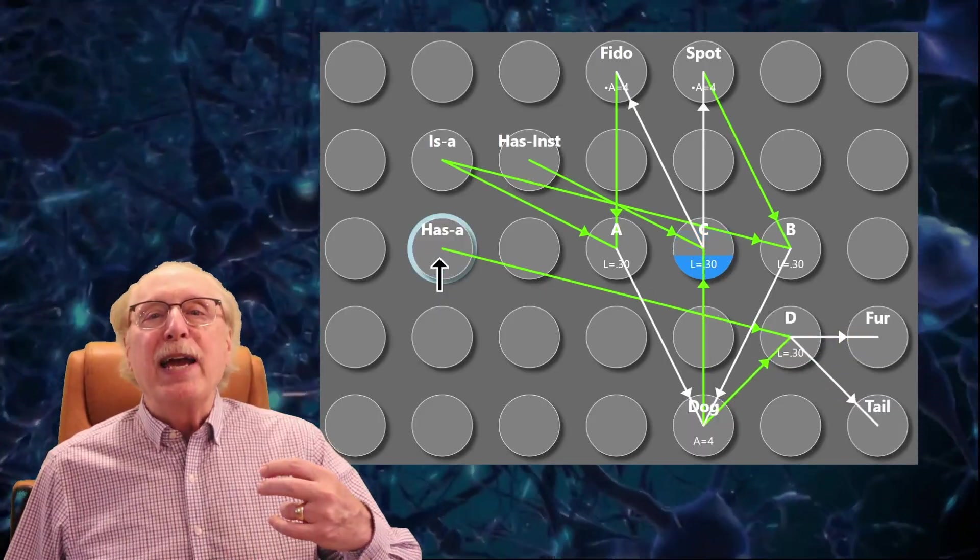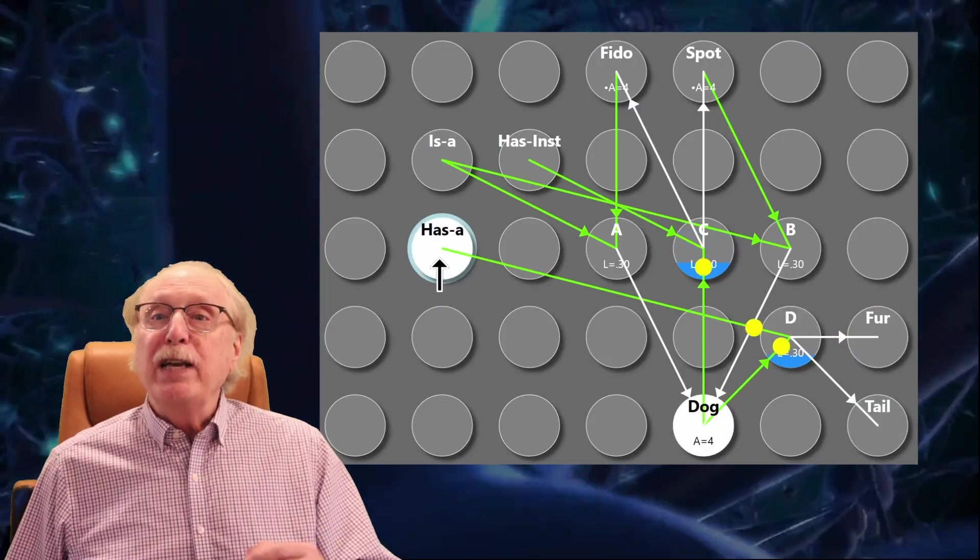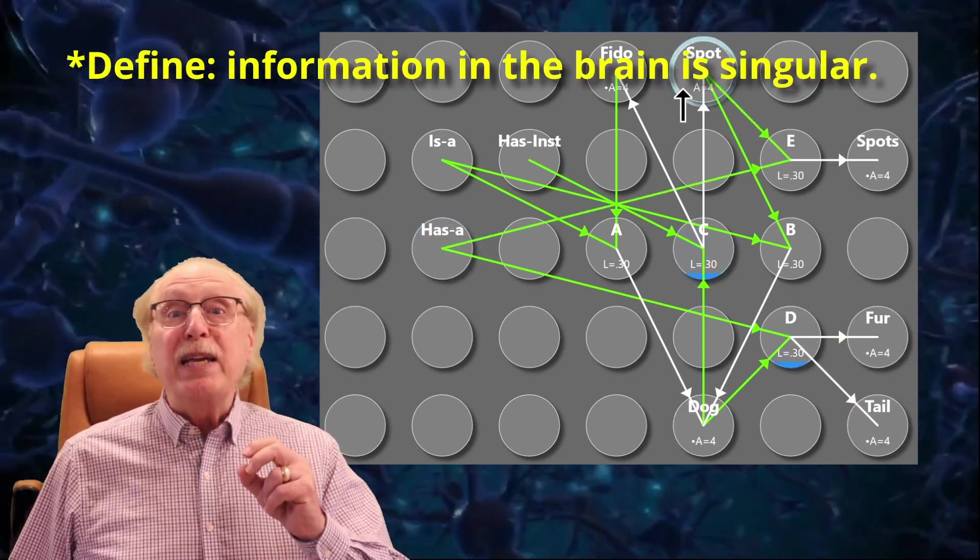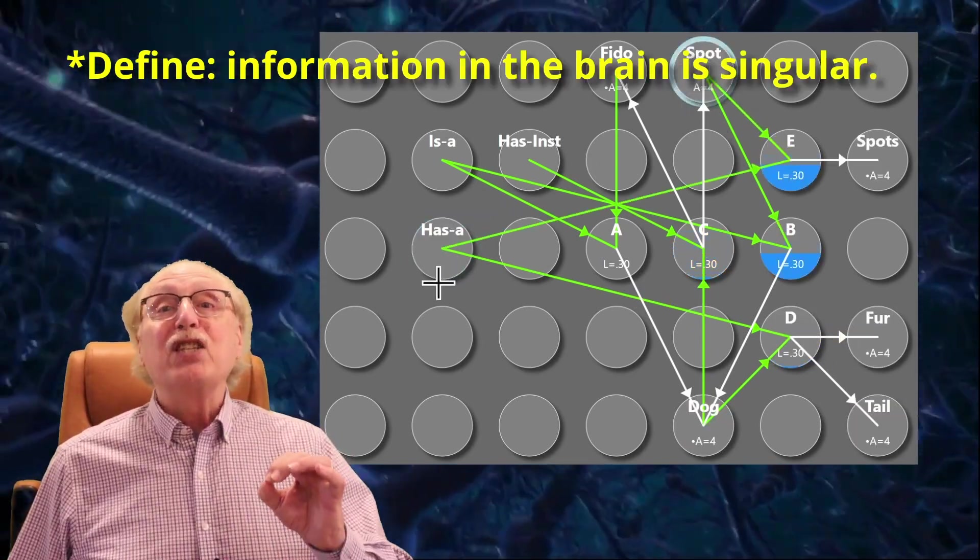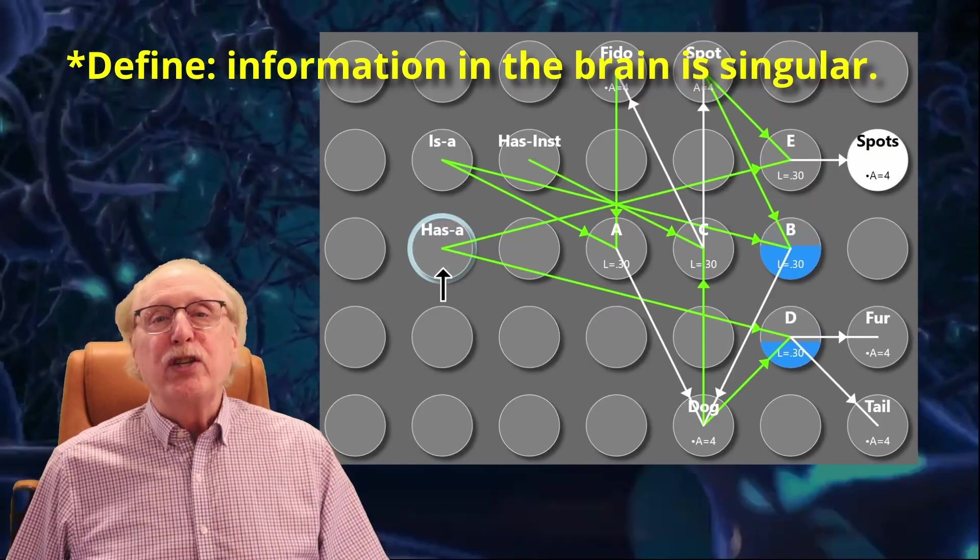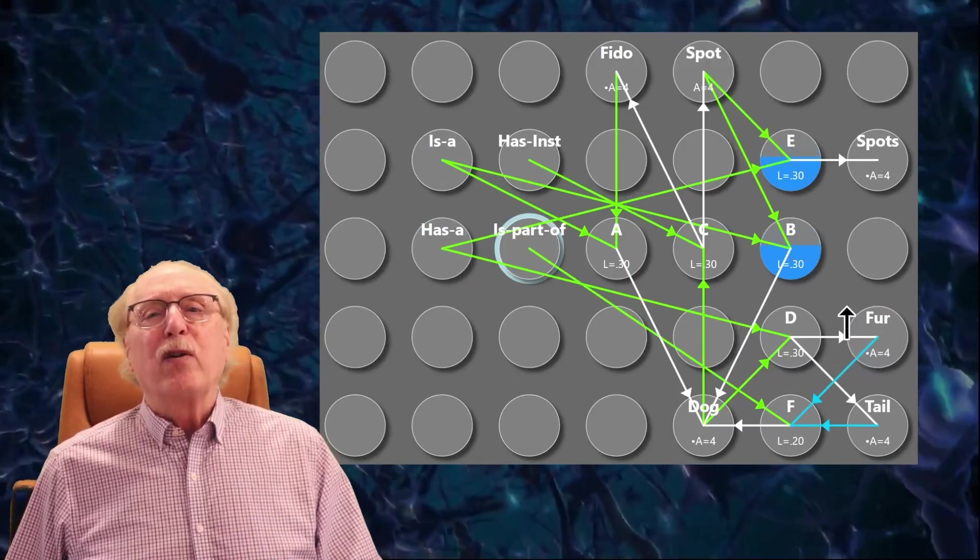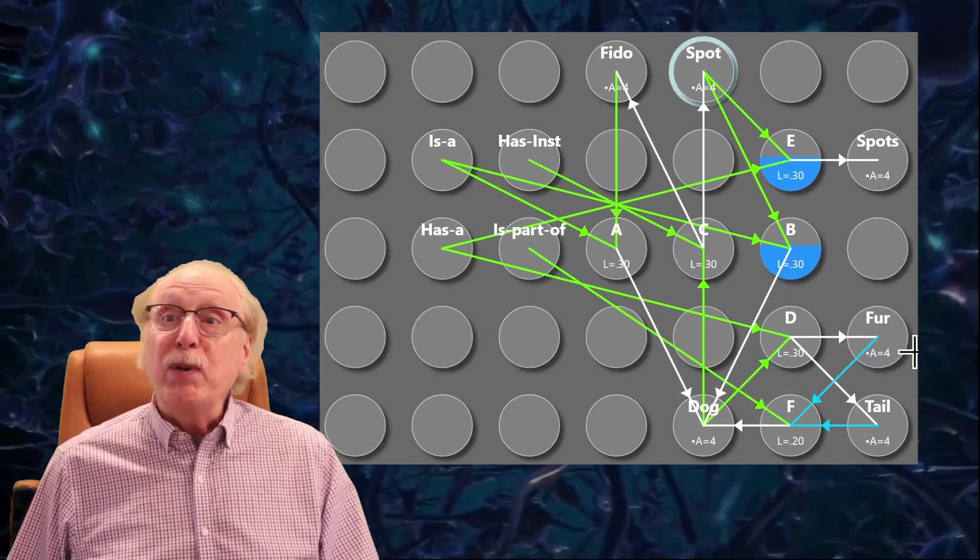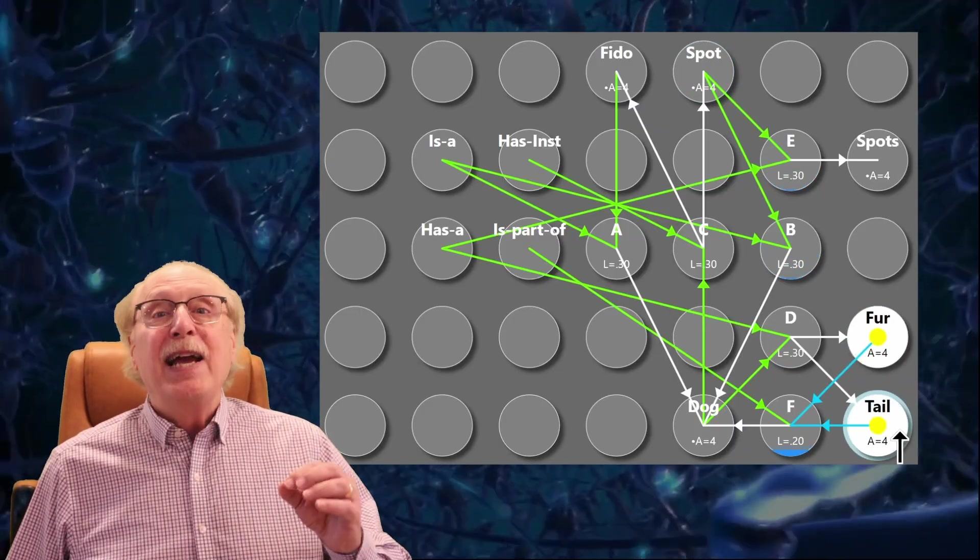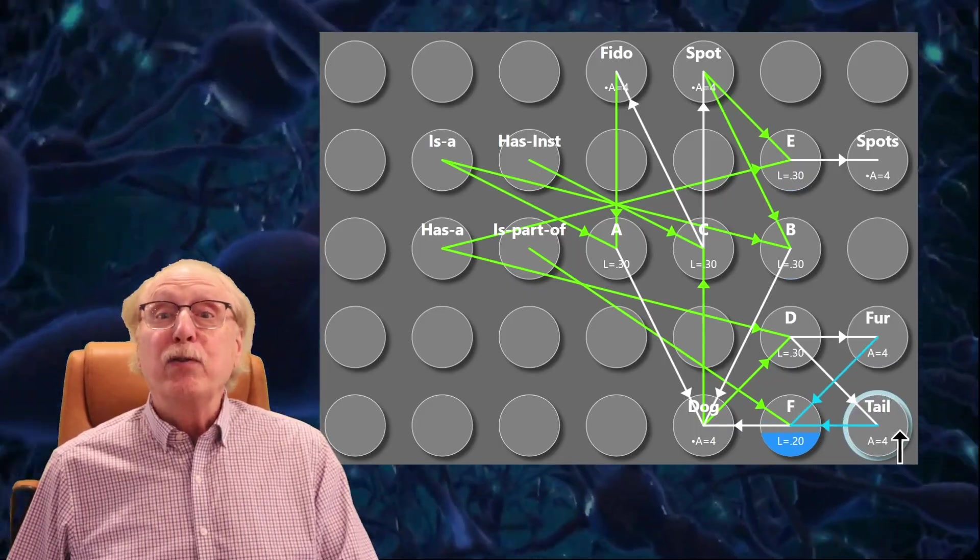So let's add the neurons to represent that dogs have fur and tails. That way, if we ask for the attributes of dog by firing has a, we'll find fur and tail. We can add a similar set of neurons to mean that spot has spots. And we can add the inverse relationship too, and label it is part of. Now not only can we ask for the attributes of a dog, we can ask what has fur and a tail, and learn that it's a dog by firing the is part of neuron.